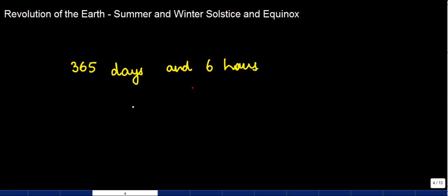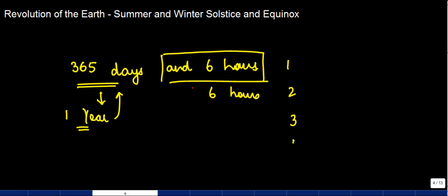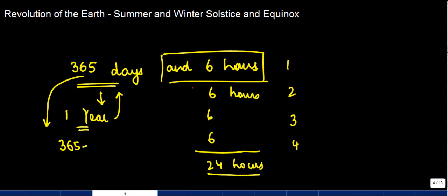We tend to ignore these six hours and consider 365 days, so we say one year has 365 days. One year is based on the period taken by the Earth to revolve around the Sun. Every year we keep adding these six hours — six hours in year one, year two, year three, year four — giving us 24 hours. In a leap year, instead of 365 days we have 366 days.